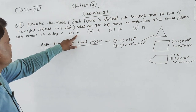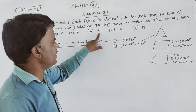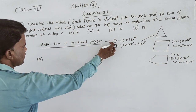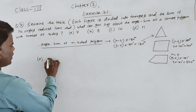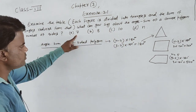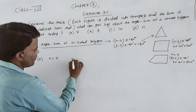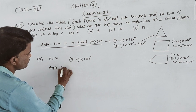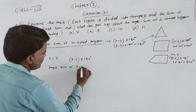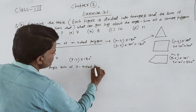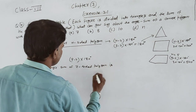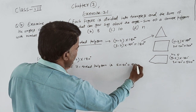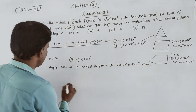तो ऐसे यह एक example table given है according to the question। जो sides given हैं number of sides 7 के according find करना है। Angle sum of N-sided polygon — formula है N minus 2, multiply 180। N equal to 7 put करेंगे: 7 minus 2, multiply 180 — 5 multiply 180 — it means 900 degrees।